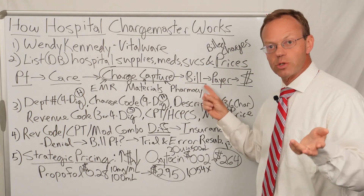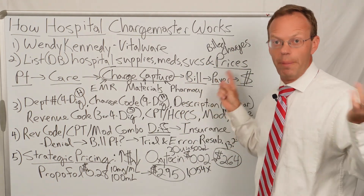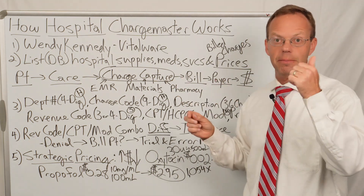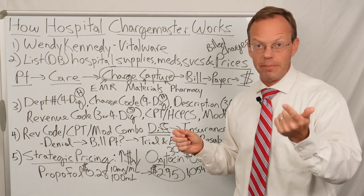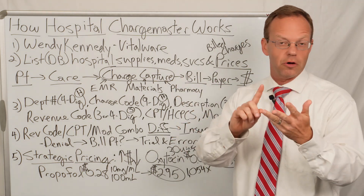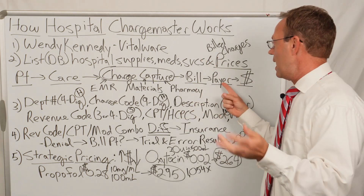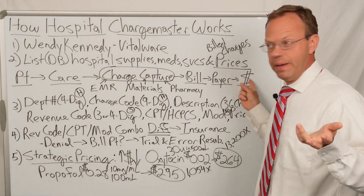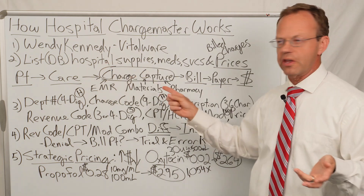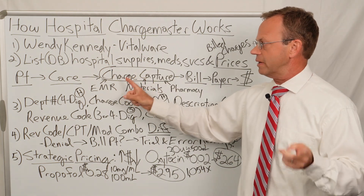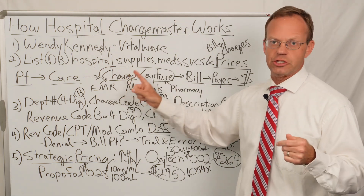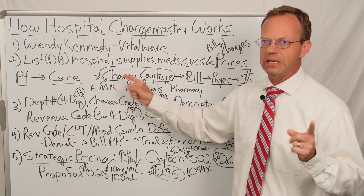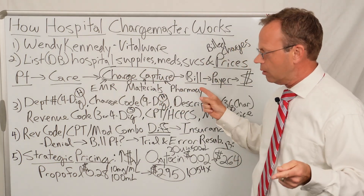That bill is then sent — mostly electronically — to the payer, which could be Medicare, Medicaid, or commercial insurance like Blue Cross, United, Cigna, Aetna, etc. Then the money goes out to the hospital and they get paid. That whole thing is called the revenue cycle, and the charge master is the list or database that facilitates charge capture being translated into the bill.